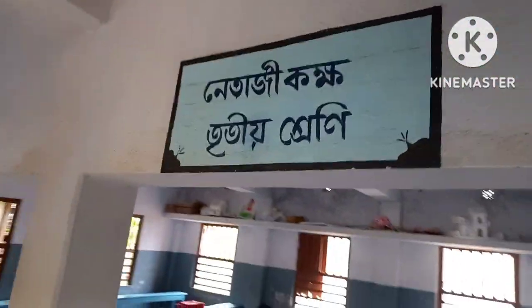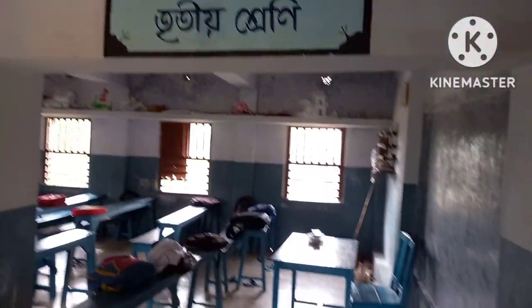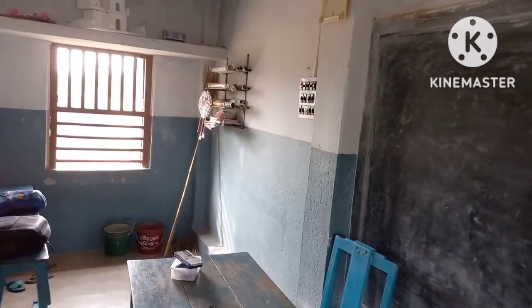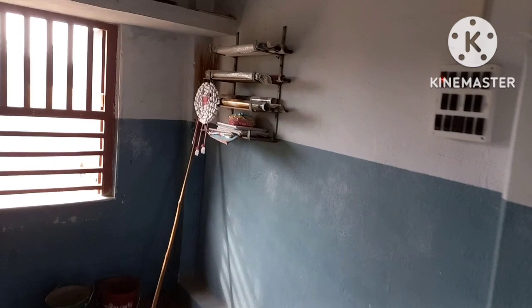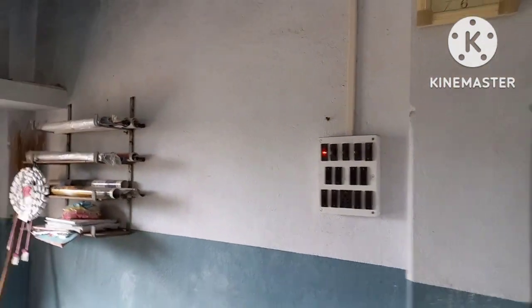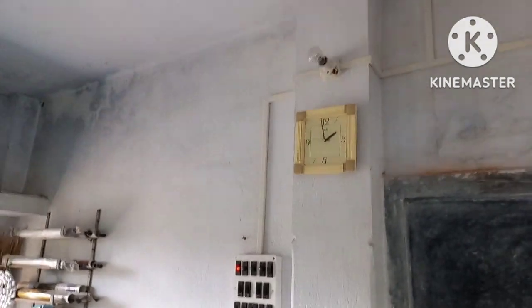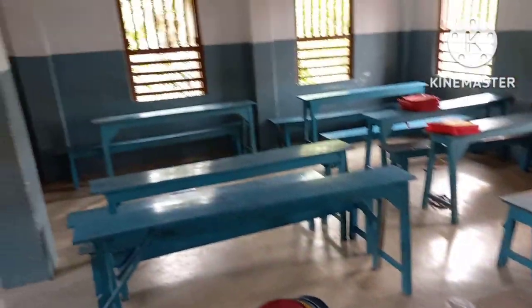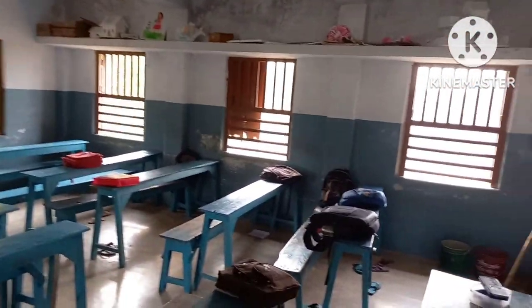On the right side we have Netaji Kaksha, reserved for Class 3. The classroom is well furnished with clock, lights, fans, bench, table, chair, chalk, and everything needed. The classroom is also well ventilated and well lit.